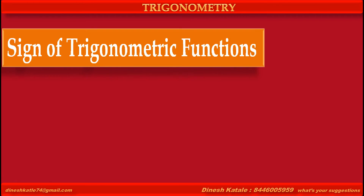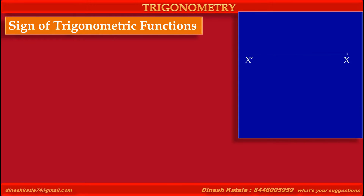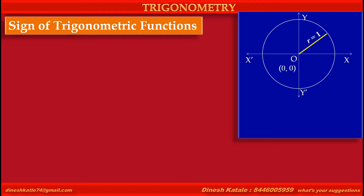Now, we have to learn about sine of trigonometric functions. Consider a horizontal line as the x-axis and vertical line as the y-axis. A circle with center at the origin and radius equal to 1 — this is the standard unit circle. Let P(x, y) be any point on the circle.